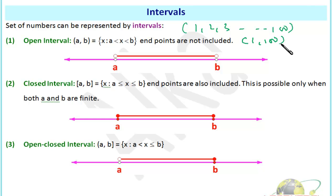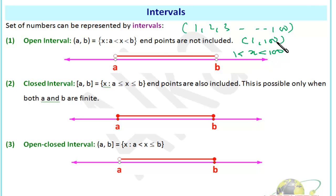In an open interval, all numbers from 1 to 100 are taken but 1 and 100 themselves are not included. This is represented by small (round) brackets. If x is any number in the open interval (1, 100), then x is greater than 1 but less than 100 — no equal-to sign. So 1 and 100 are both excluded. We represent this as (a, b), where a and b are not included. Since we are dealing with real numbers, it's not feasible to list all values, so this interval notation is used.